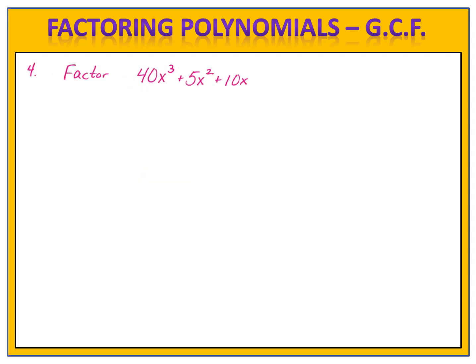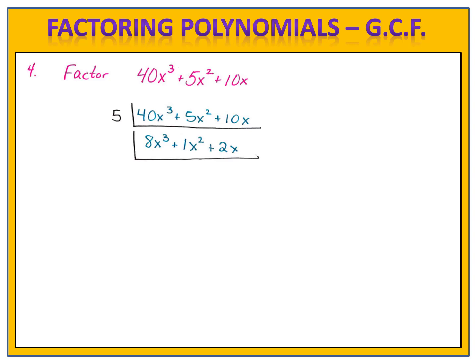We can expand this process to trinomials — polynomials that have three terms — and the process is identical. We begin by copying the problem 40x to the third plus 5x squared plus 10x. We look at all three numbers and we're looking for the largest number that evenly divides 40, 5, and 10. The largest possible number is 5, because that's the smallest number, and it turns out that 5 does divide all of these. So we factor out a 5 and divide each term by 5. Re-examining the numbers 8, 1, and 2, the largest number that divides all three is 1, so there are no further numbers to factor out.